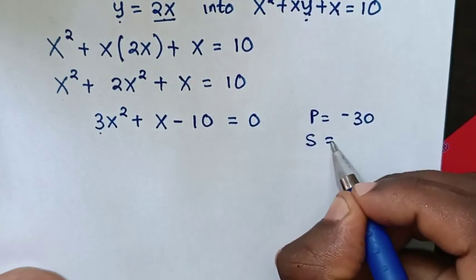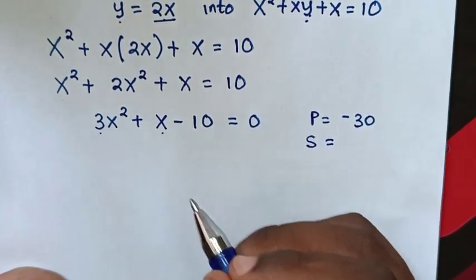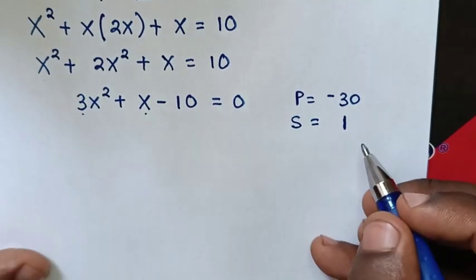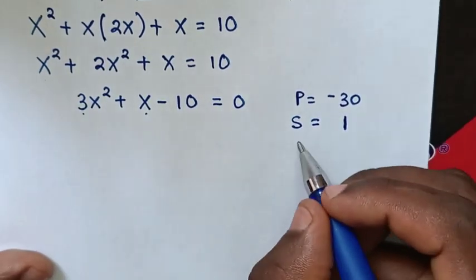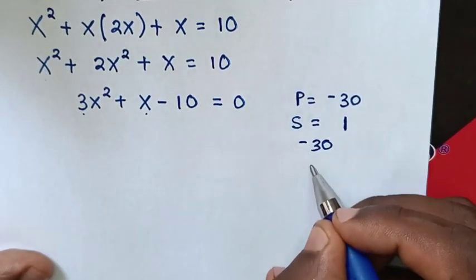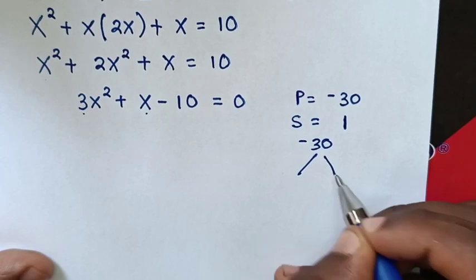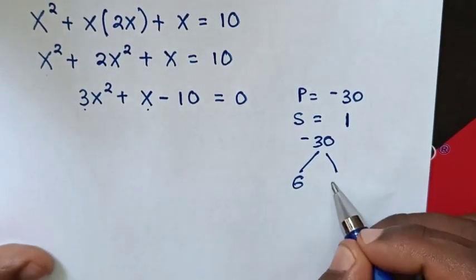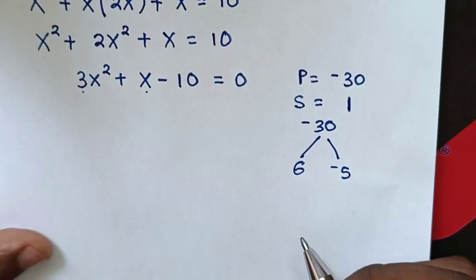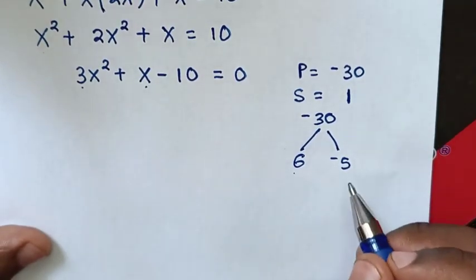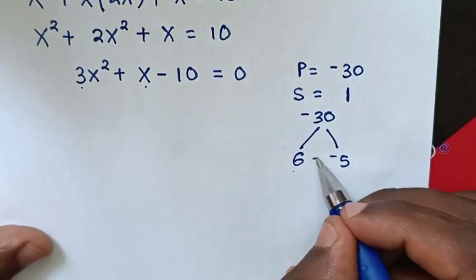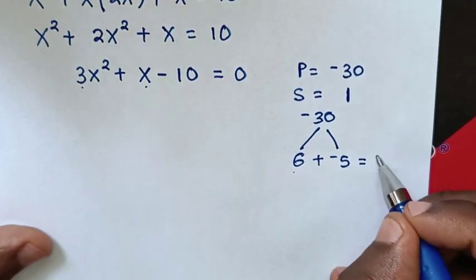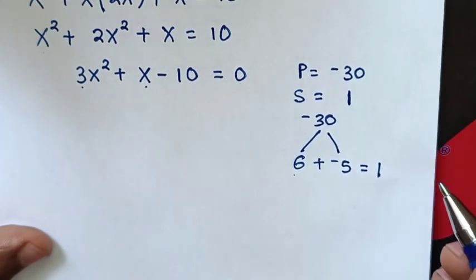And sum is the coefficient of x, which is 1. So to get negative 30 as a product of two factors, which is 6 and negative 5. So 6 times negative 5 is negative 30, and the sum 6 plus negative 5 is 1, which matches.